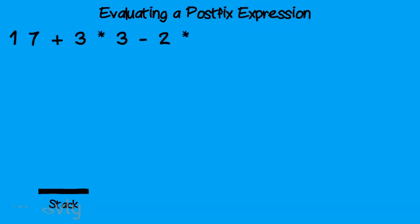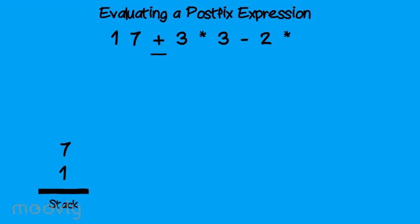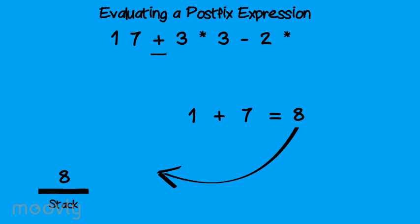Evaluating a postfix expression. Evaluating a postfix expression is straightforward when using a stack. For this operation, the stack will hold operands, or integers, only. Parse through the given string, and when you come to an integer, push it onto the stack. When you come to an operator, check the number of elements in the stack. If there are less than two elements in the stack, the expression is invalid. If there are two or more elements, pop the top two elements off the stack. The top element becomes the right operand, and the bottom element becomes the left operand. Place the operator between the two and evaluate the expression. The result is then placed back onto the stack.